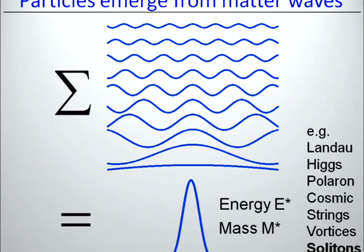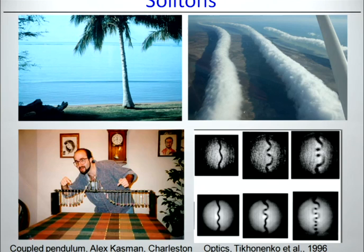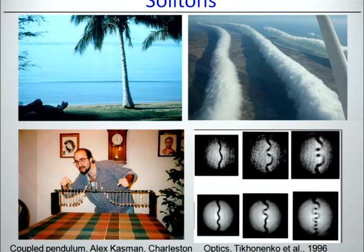Lambda particles, quasi-particles, the Higgs boson, polarons, even cosmic strings — and vortices as seen on the previous slide. This talk will be about solitons. These are known in many different fields of physics whenever you have a nonlinear wave equation where the nonlinearity compensates for the dispersion. You can build solitonic waves that propagate — in the case of water, for kilometers through narrow canals. You can also build them at home on coupled pendulums, and in optics propagating through fibers.